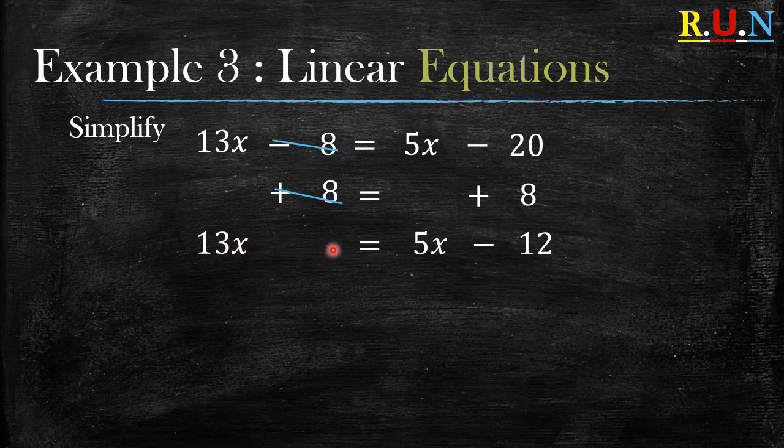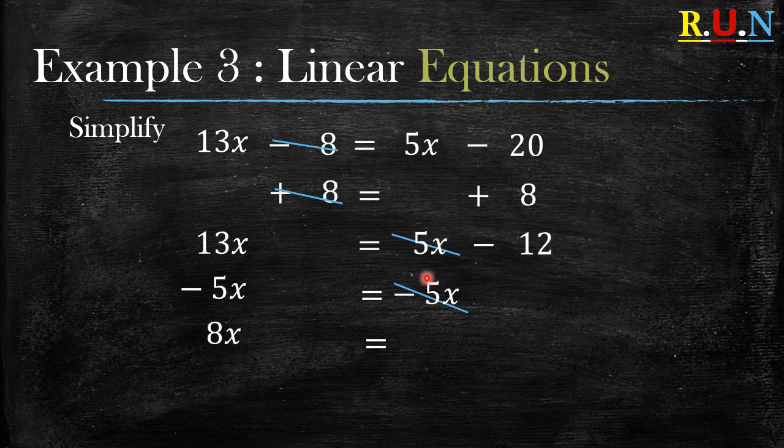Now what is our main aim? Our main aim is to have x on one side, this x variable on one side. So what do we do? Let's look at this 5x. Let's cancel this 5x from here so that we can only have an x on this side. How do we cancel this 5x? By minusing a 5x on this side. Remember, whatever you do on one side you need to do on the other side. So on the other side we minus a 5x as well. What is 5x minus 5x? It will cancel out. On the other side, 13x minus 5x will give you 8x. After the 5x cancels out on this side, we are left with negative 12.